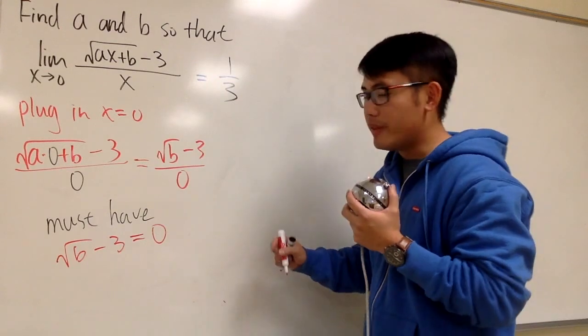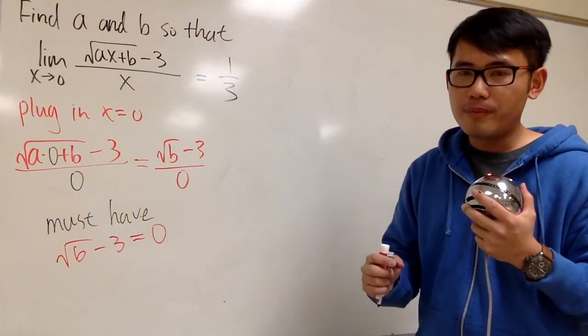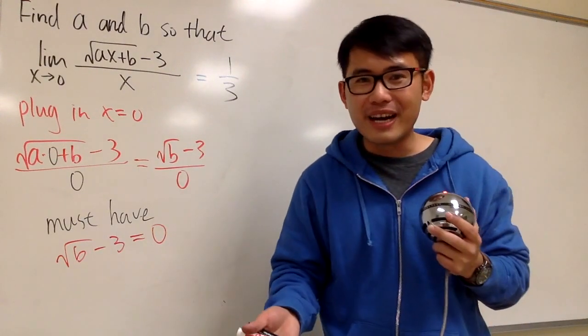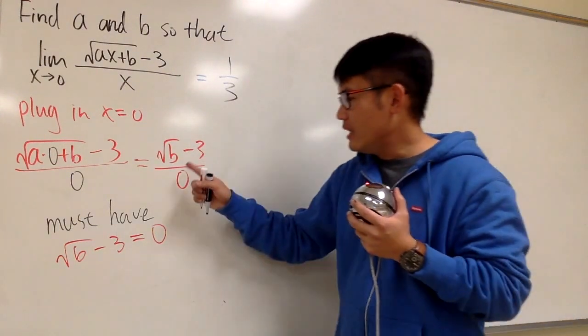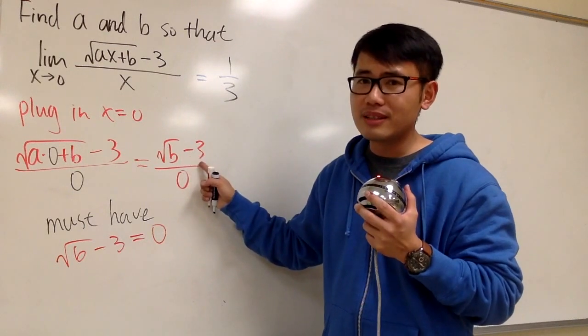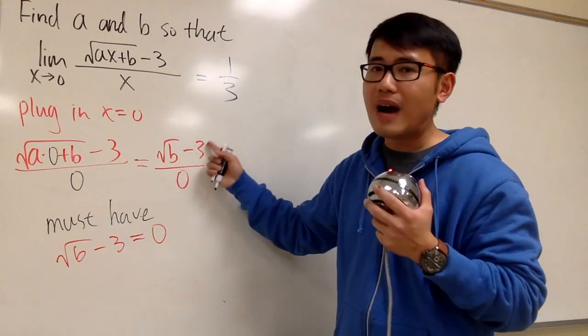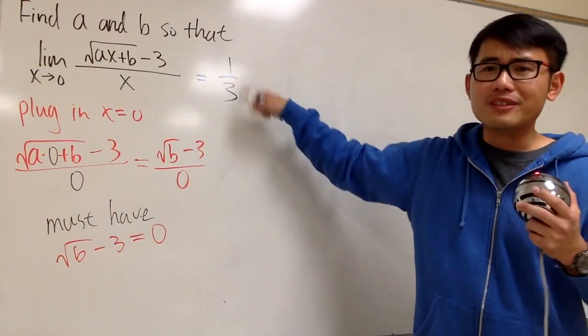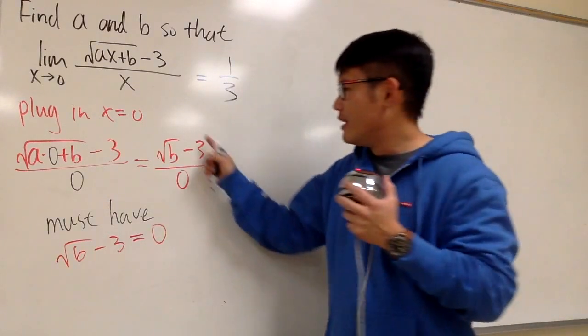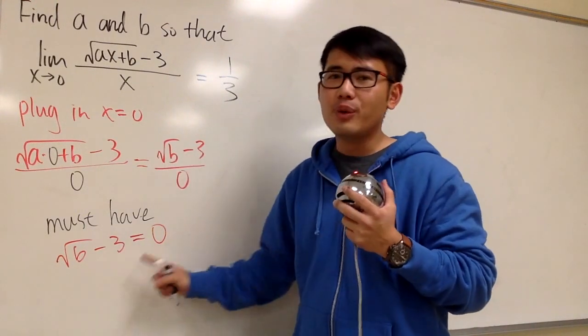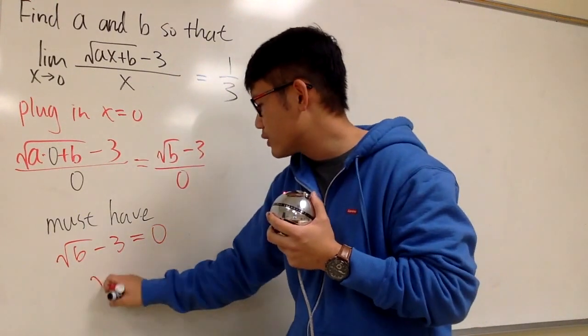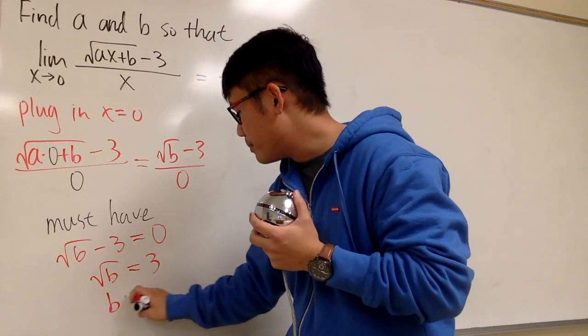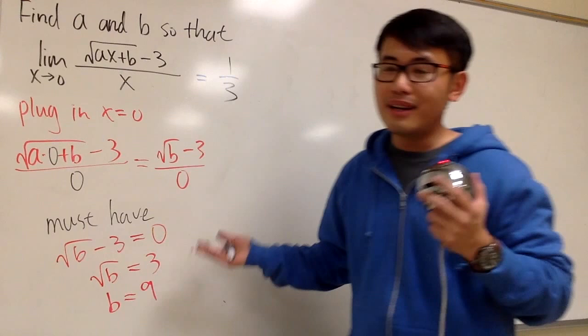And once again, whenever we have 0 over 0 when we're doing limits, that's possible, and we can end up with a finite value at the end. If the top is not 0 in this case, let's say the top is equal to 5, 5 over 0, we will end up with infinity. That's certainly not 1 third. So once again, the top we must have equal to 0 as well. And when you do that, square root of b equals 3, and square both sides, we know b has to be 9.